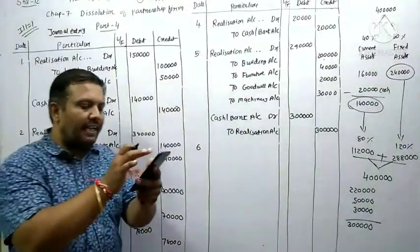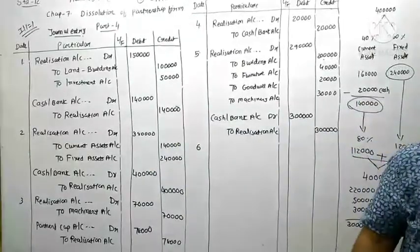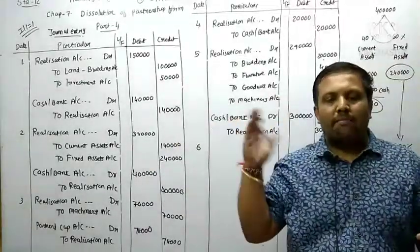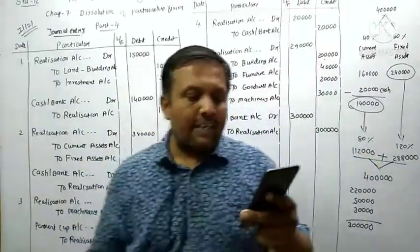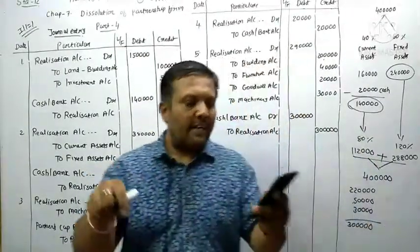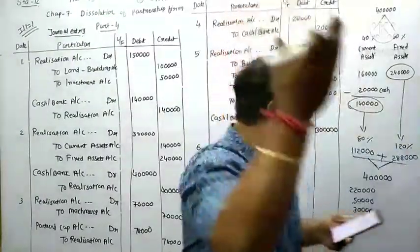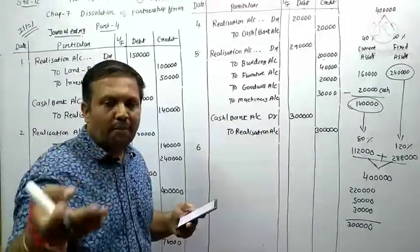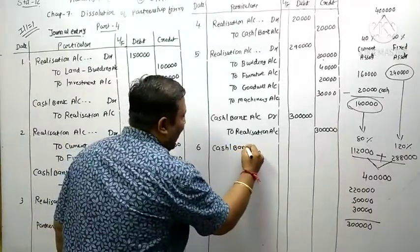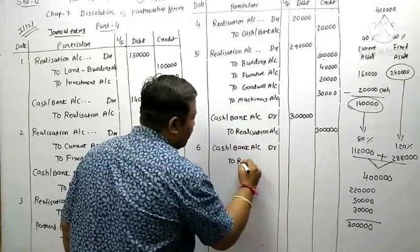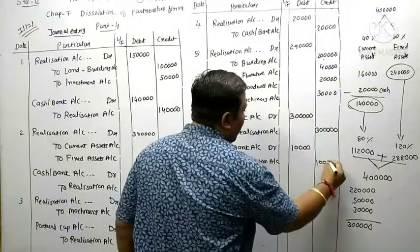Transaction 6: Bad debts of rupees 12,000 were written off in the past - those entries were already made then. Out of that, 10,000 is now received. Since cash is coming in, entry is: Cash and Bank Account debited to Realization Account 10,000. The past bad debt entry is not repeated; only the cash received is recorded.